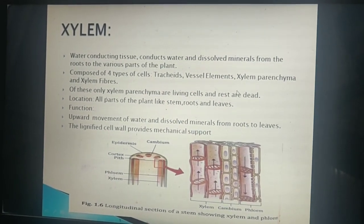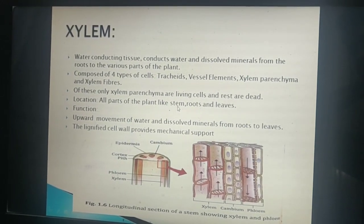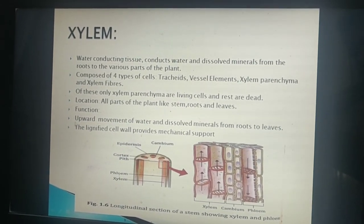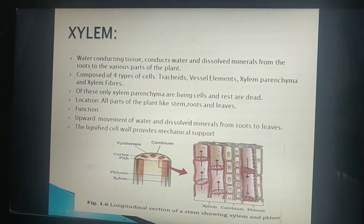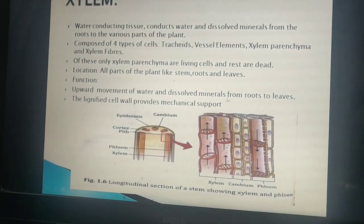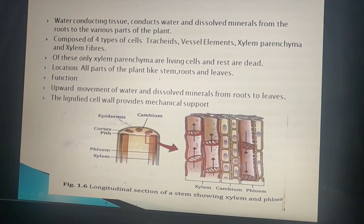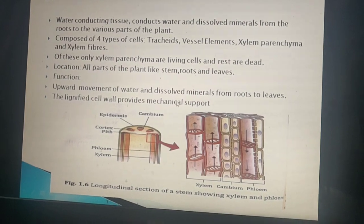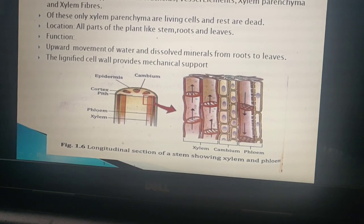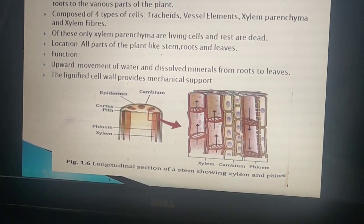Of these four cell types, the xylem parenchyma is living and the rest are dead. Xylem is present in all parts of the plant — stem, roots, and leaves. Its function is to help the upward movement of water and dissolved minerals from the roots to the leaves. The direction of flow of water is upward. The lignified cell wall provides mechanical support. The diagram shows this upward direction of xylem flow.